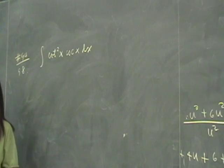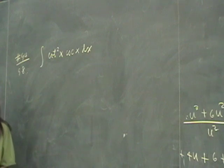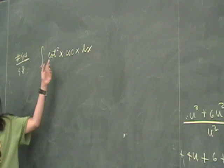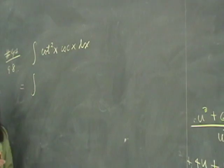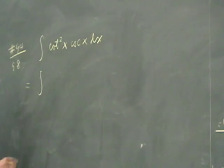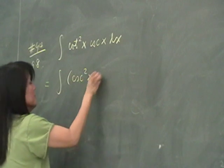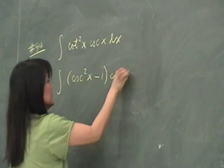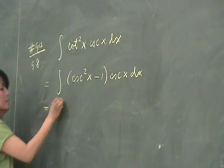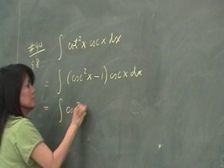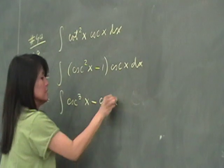Because cotangent is cosecant squared, right? Okay, so you have to do the other way. Rather than having cotangent, what does it mean? Cosecant squared plus minus 1. We can use cosecant squared minus 1, right? So cosecant squared x minus 1 times cosecant x. And then distribute it. Then you get cosecant cubed x minus cosecant x.